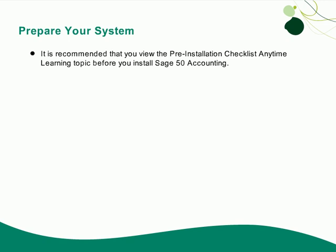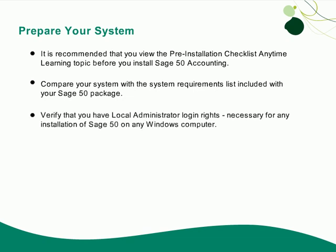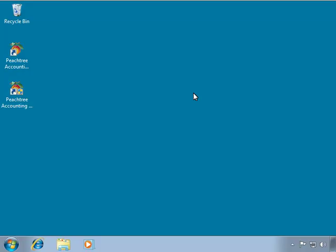The pre-installation topic will quickly walk you through preparing your system for a successful installation, including comparing your system with the system requirements list included with your Sage 50 package, verifying that you have the required local administrator login rights, configuring antivirus and firewall software so that they do not interfere with the installation and program functionality, and more. Once you have prepared the system, you can begin installing Sage 50 Accounting.